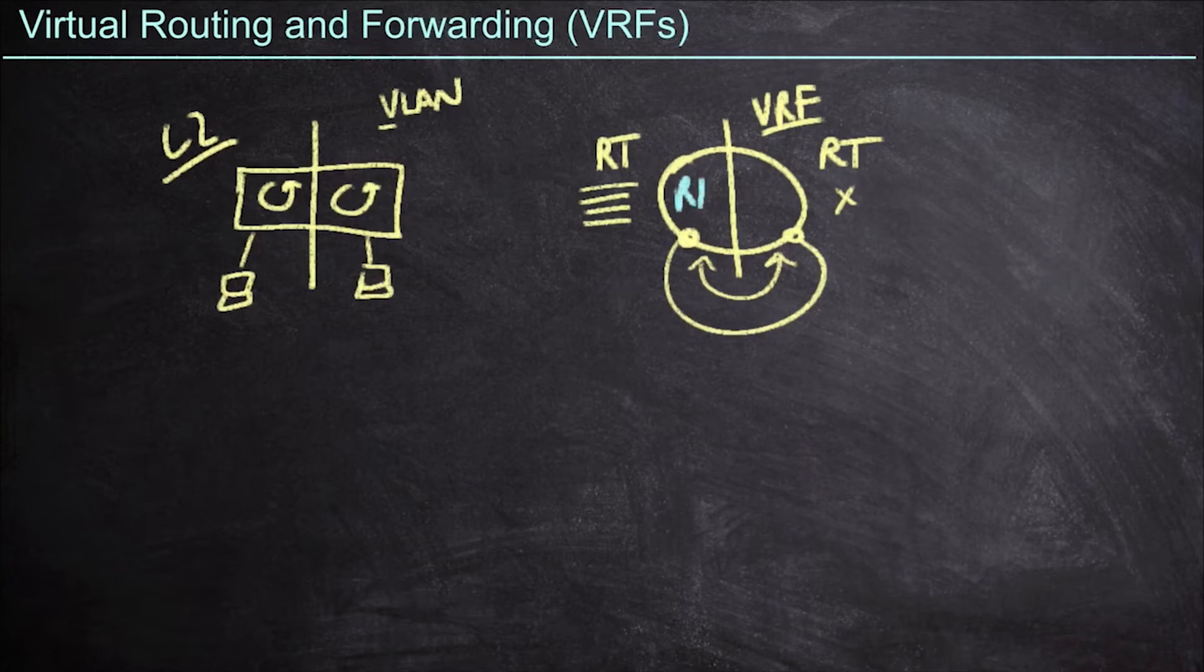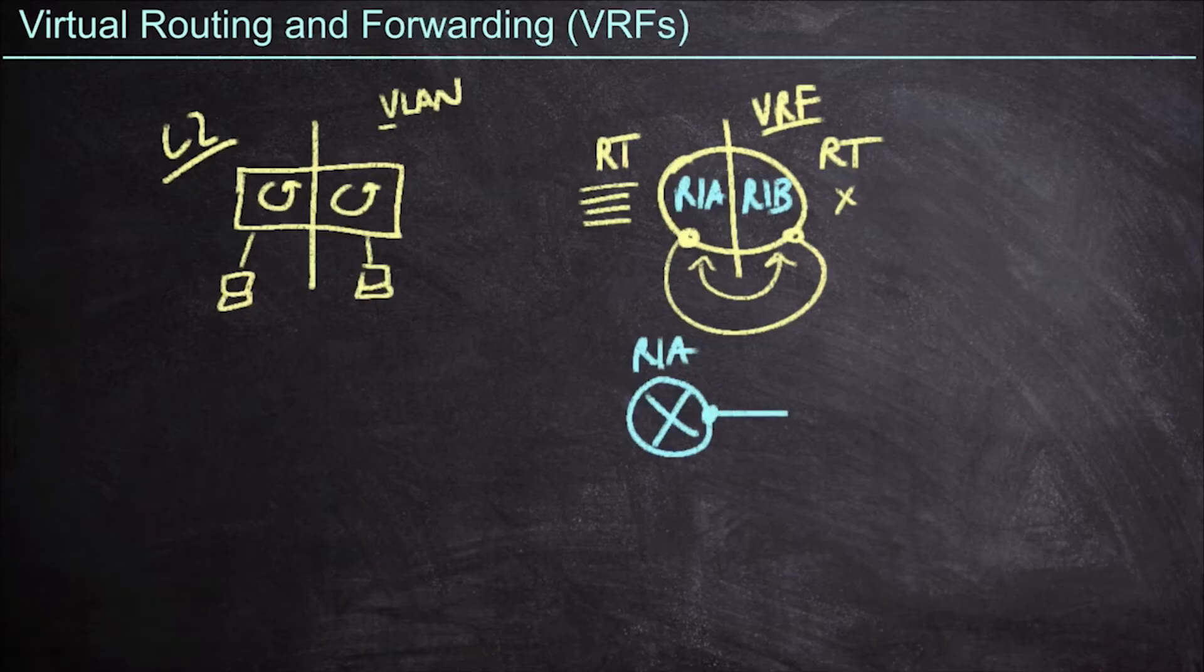At this point, we essentially have router 1A and router 1B. And so we can draw this out logically by showing an actual router, router 1A, with a physical connection to a different router, router 1B. We have separate routing tables in each one of these routers. That's essentially the mark of a VRF.